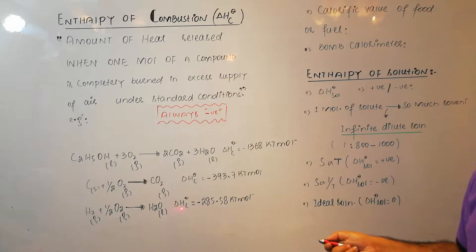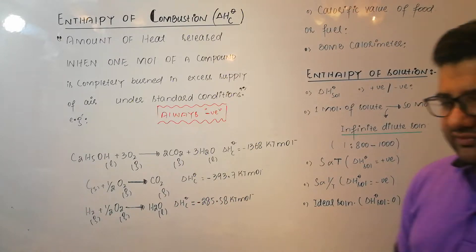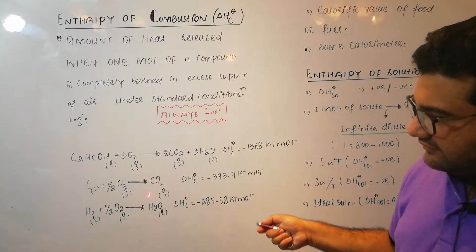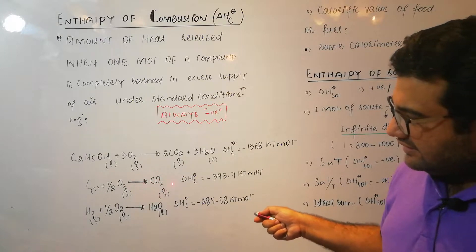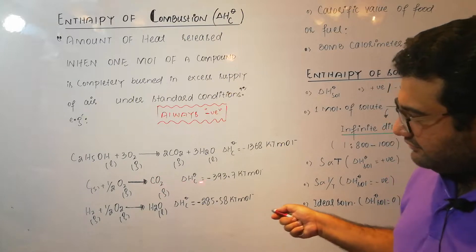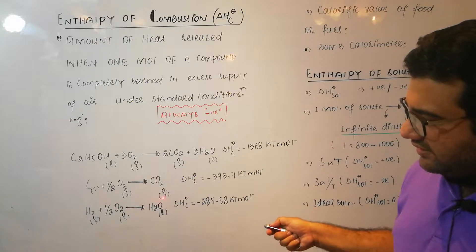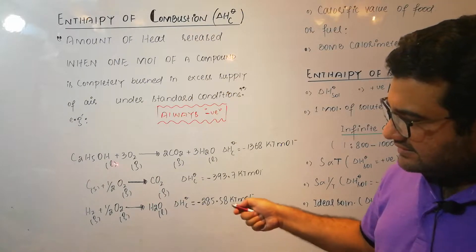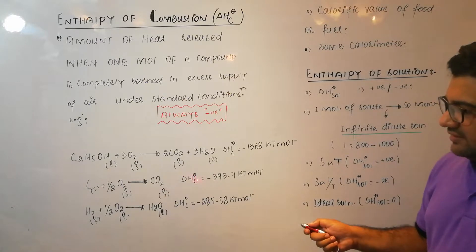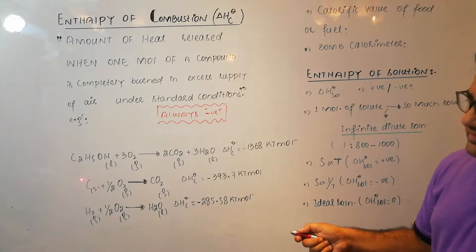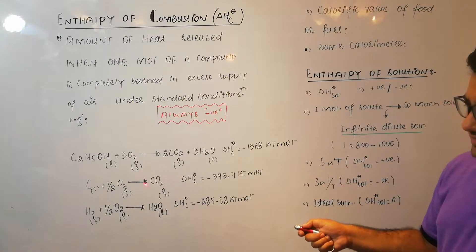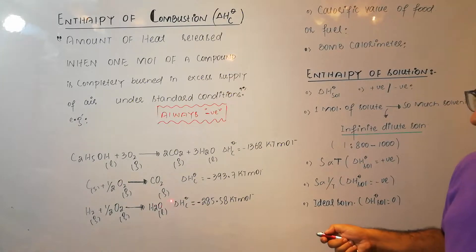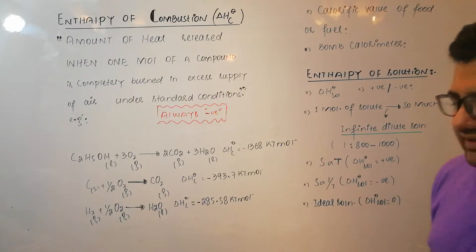The enthalpy of combustion of hydrogen is minus 285.58 kJ per mole. Now listen very carefully — look at these two equations carefully. The first equation is also the enthalpy of formation of CO₂. In the second equation, it is also the enthalpy of formation of water because one mole of compound is formed from the respective elements. So the enthalpy of combustion of carbon is also the enthalpy of formation of CO₂, and the enthalpy of combustion of hydrogen is also the enthalpy of formation of water — both are the same.